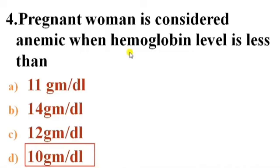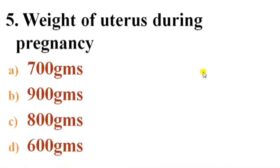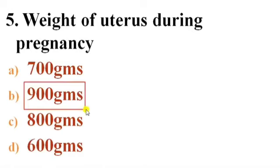Next question: Weight of the uterus during pregnancy. Options: A) 700 g, B) 900 g, C) 800 g, D) 600 g. Answer is B — 900 grams. At term, the uterus enlarges from 50 grams to between 900 to 1000 grams, so the weight of the uterus during pregnancy is approximately 900 grams.